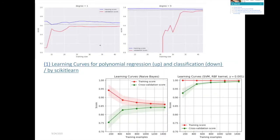Now let me show the learning curve. The upper plot is for regression and the lower is for classification. This uses about 1,400 training data points, varying from 200 to 1,400. There are pretty dramatic differences between methods.